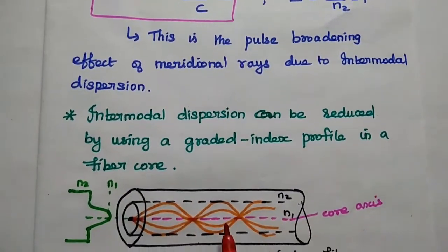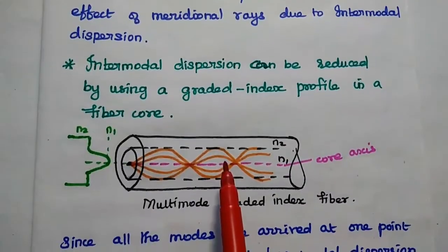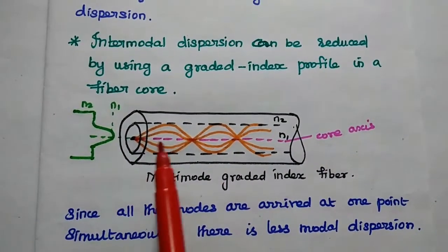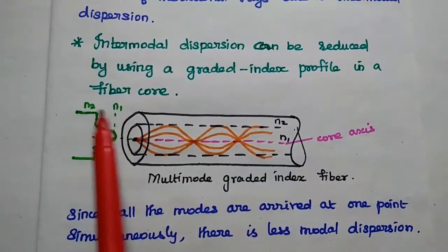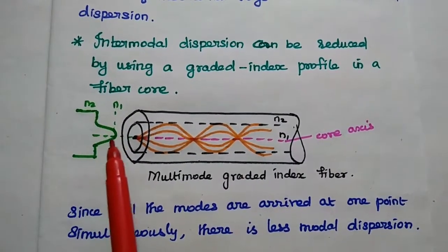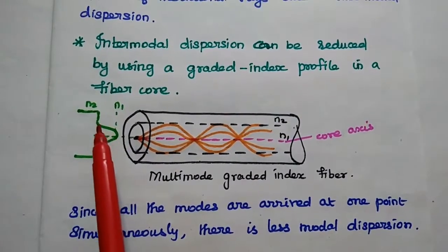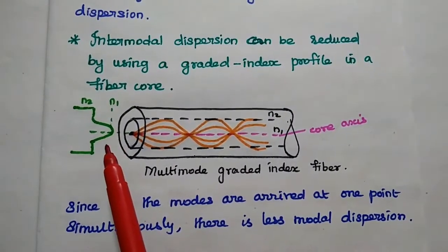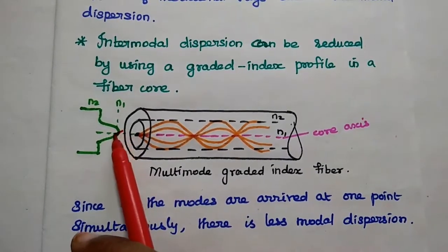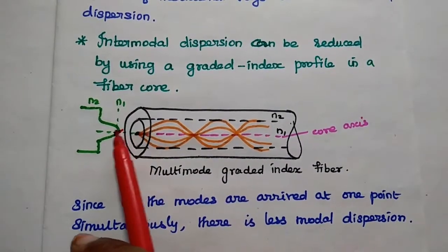So this intermodal dispersion can be reduced by using a graded index profile in this fiber core. So this is the graded index profile where the refractive index of the core varies smoothly and continuously along this fiber axis. So it has the maximum value at this core axis point.